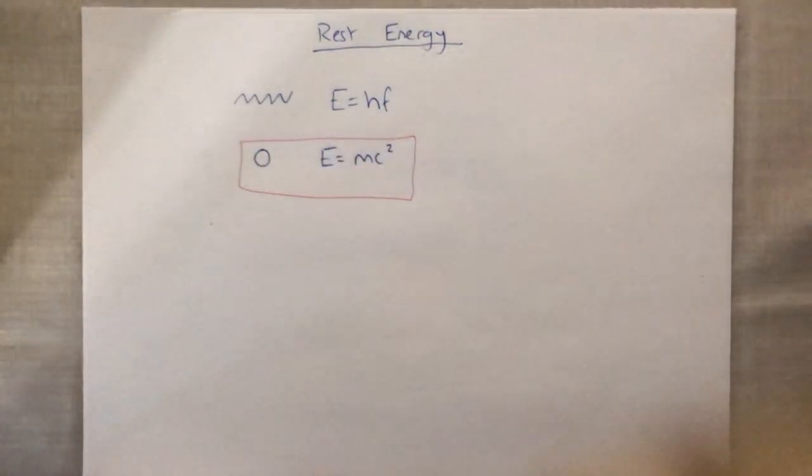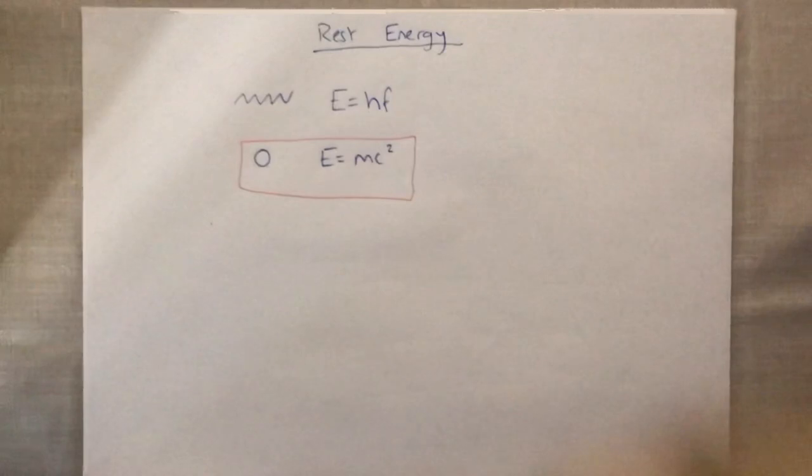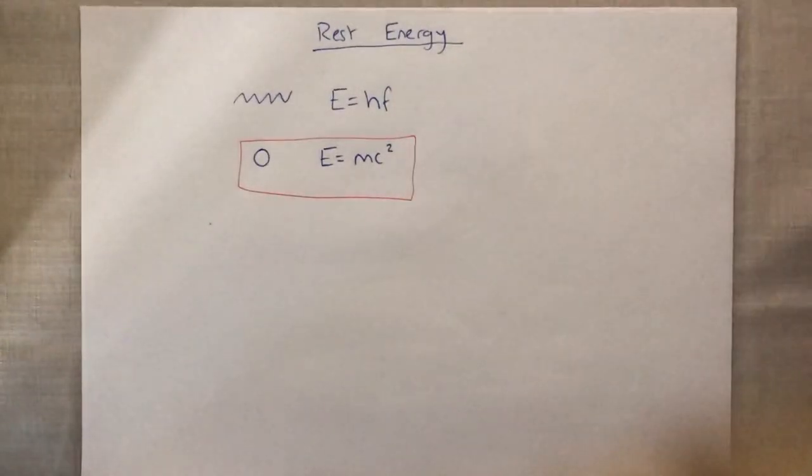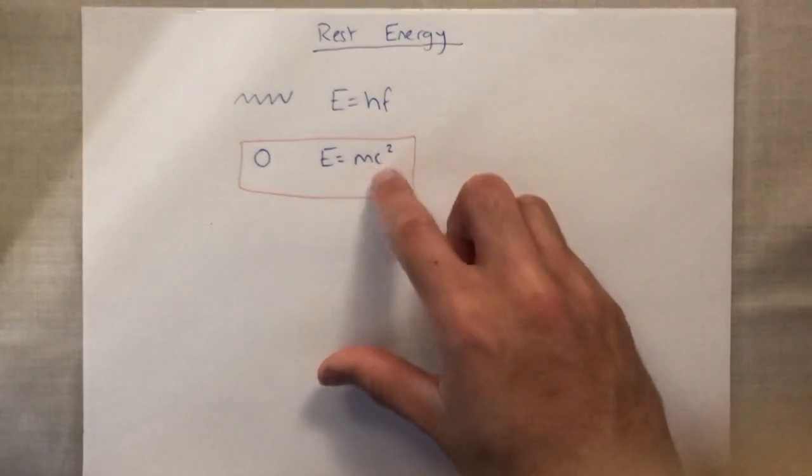So we can actually calculate the rest energy of any object. If you have a mass of anything, let's just say you've got the mass of a calculator, you can measure how much energy it's got and we'll times it by the speed of light squared.